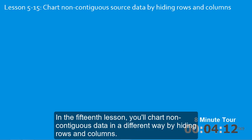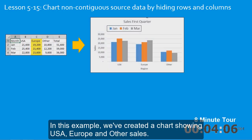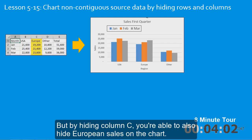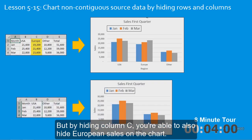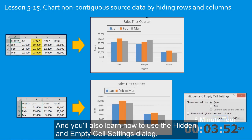In the fifteenth lesson you'll chart non-contiguous data in a different way by hiding rows and columns. In this example we've created a chart showing USA, Europe and other sales. But by hiding column C you're able to also hide European sales on the chart. And you'll also learn how to use the hidden and empty cell settings dialog.